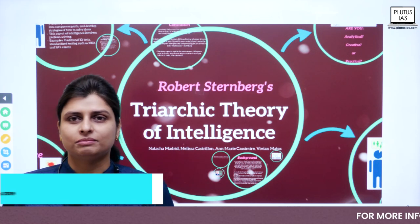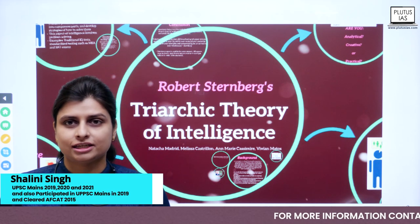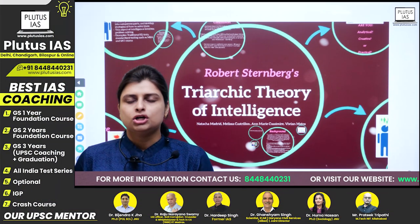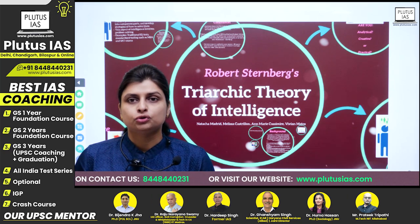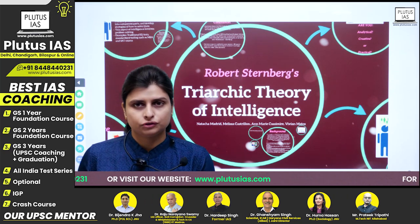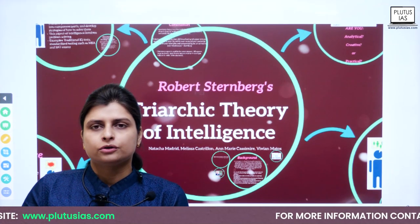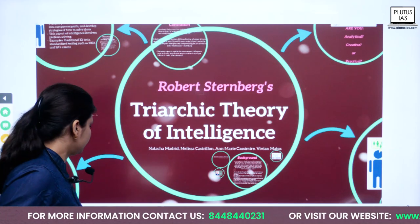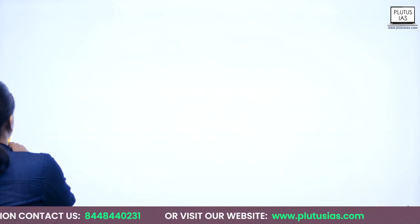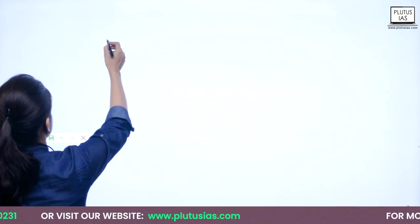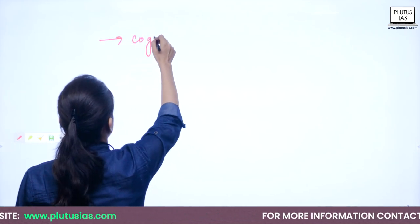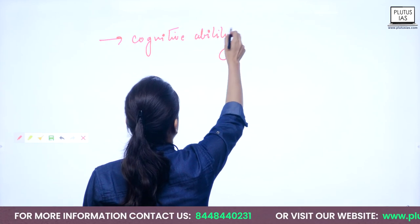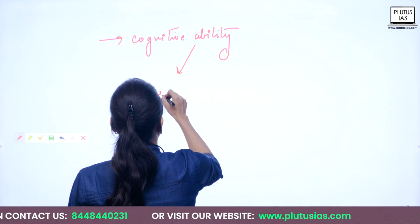Hello everyone, today we'll be discussing about Robert Sternberg's Triarchic Theory of Intelligence. This theory is very important for psychology optional. Robert Sternberg was of the opinion that human intelligence has a very strong cognitive ability — specifically, the cognitive ability to learn from experiences.